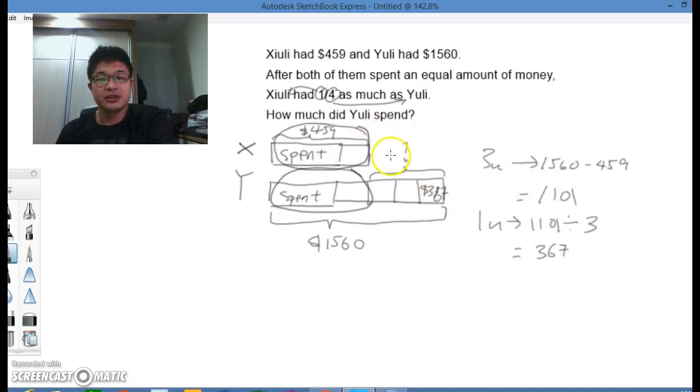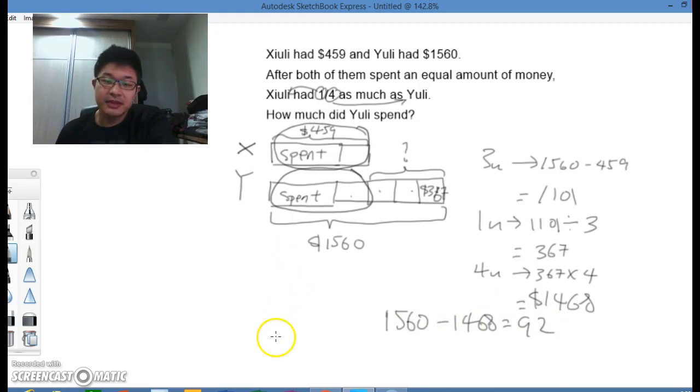Which means this one unit here is $367. Okay? So how much did Yuli spend? Yuli had four units here. So four units will be $367 multiplied by four, and that is $1468. So if this is $1468, the total is $1560. It's just simply $1560 subtract $1468, you will get $92. So Yuli actually spent $92. There you have it.